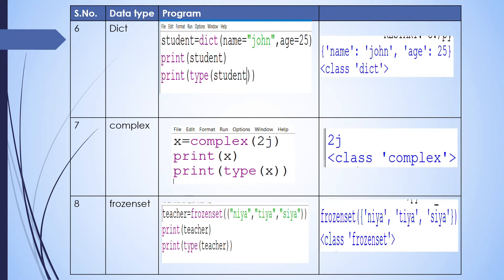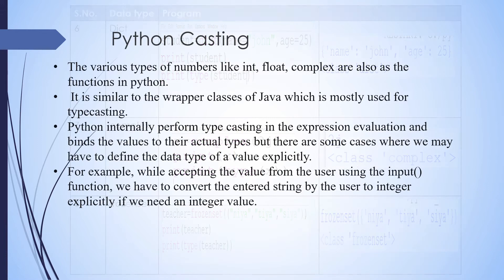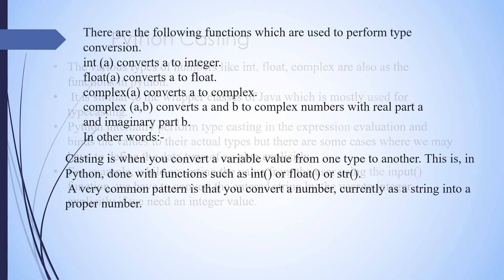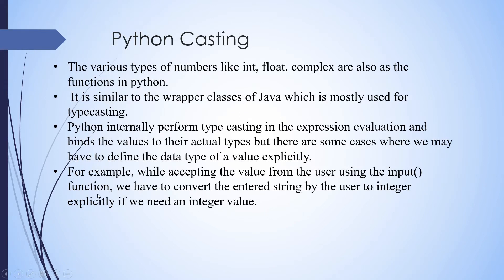To know the type of a data type we use the type function. For example, while accepting a value from the user using the input function, we have to convert the entered string. If the user has entered a string and we need a number, we have to convert it into int explicitly — if we need an integer value.